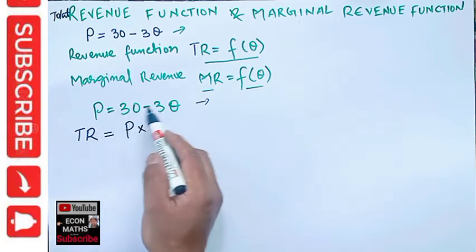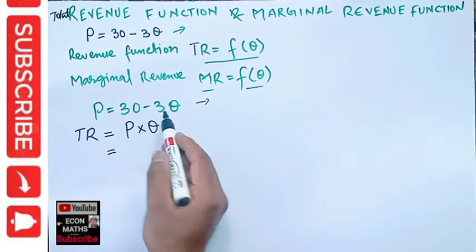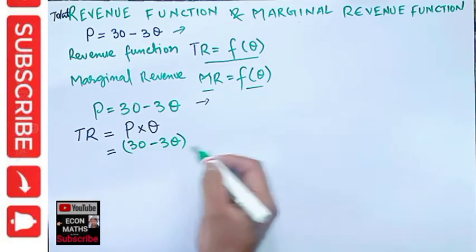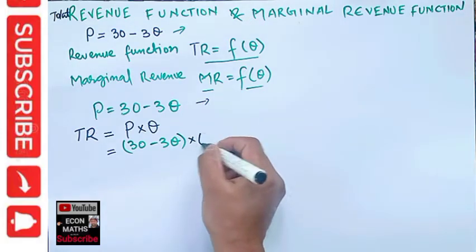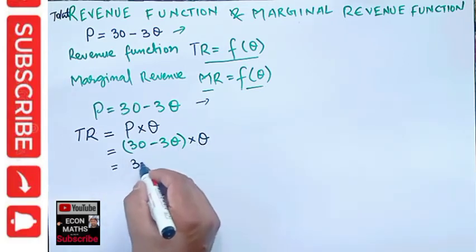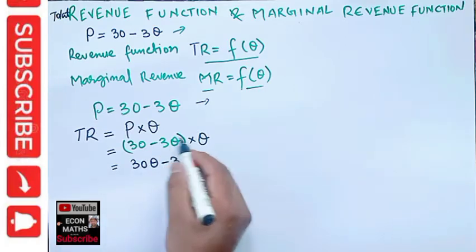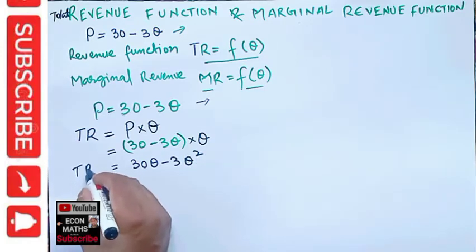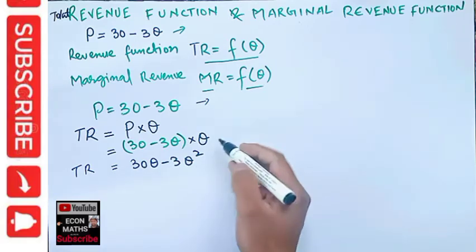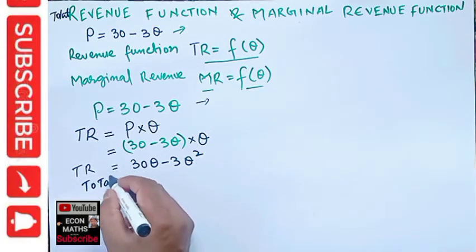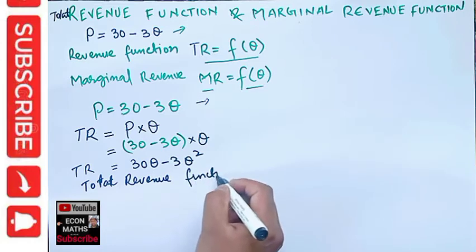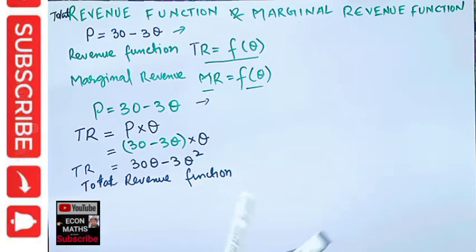Since P = 30 minus 3Q, in place of P I can write 30 minus 3Q. So total revenue equals (30 minus 3Q) times Q. Multiplying out: 30 times Q gives 30Q, and 3 times Q squared gives 3Q squared. So our total revenue function is TR = 30Q minus 3Q squared. This is our total revenue function.